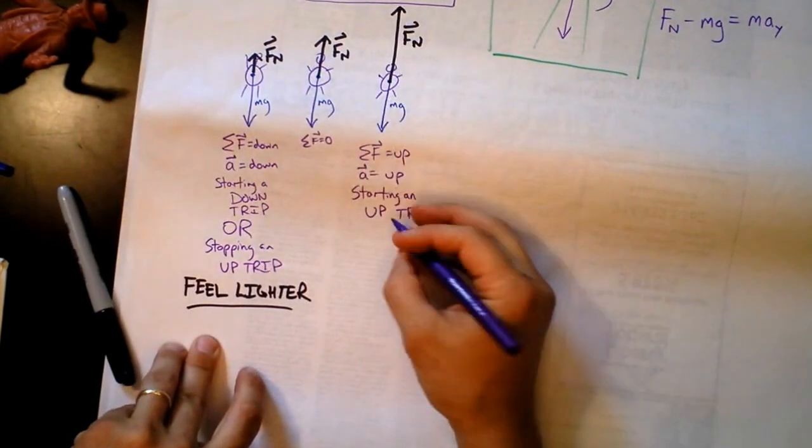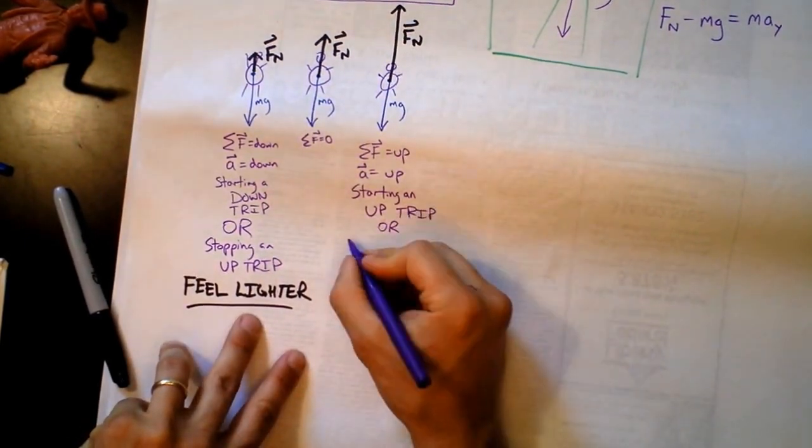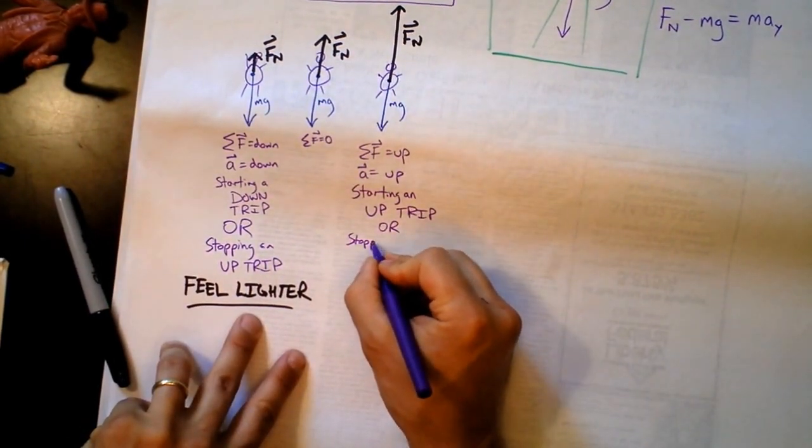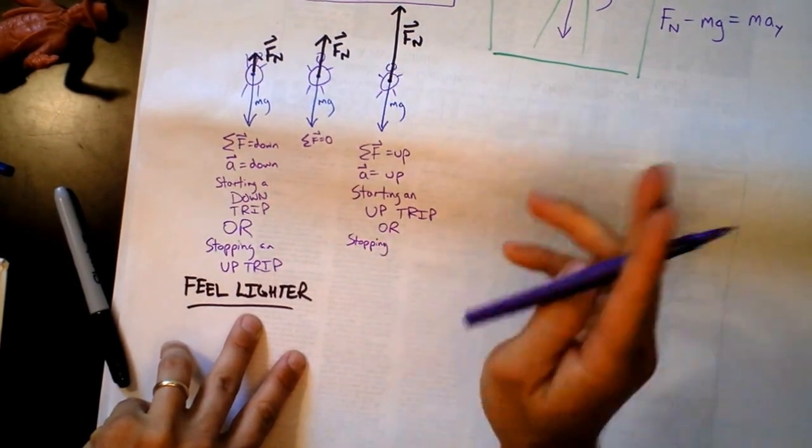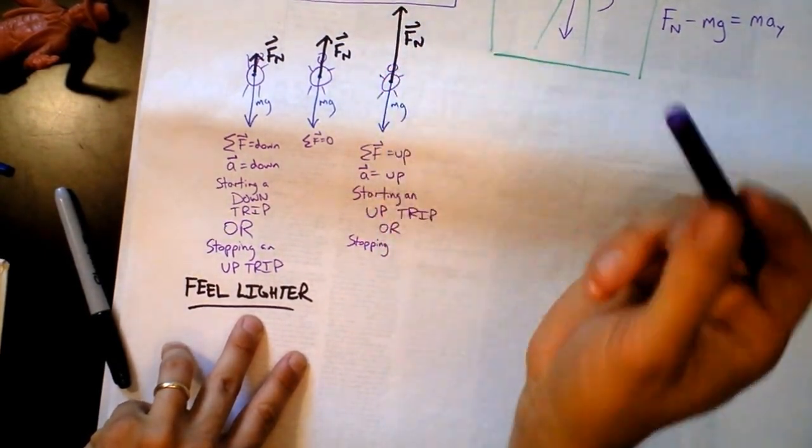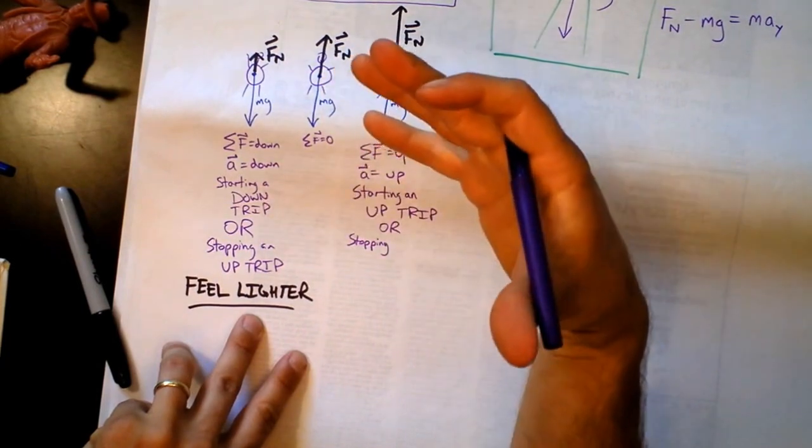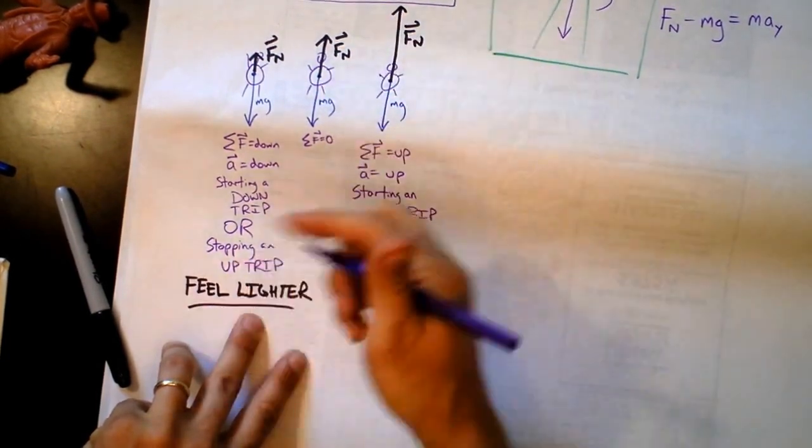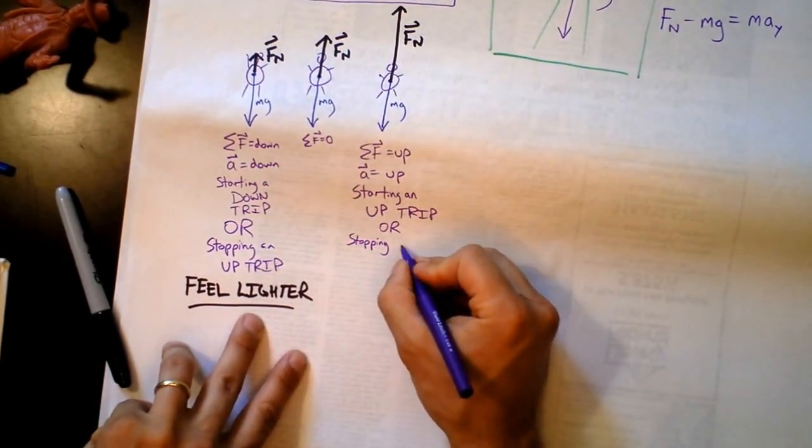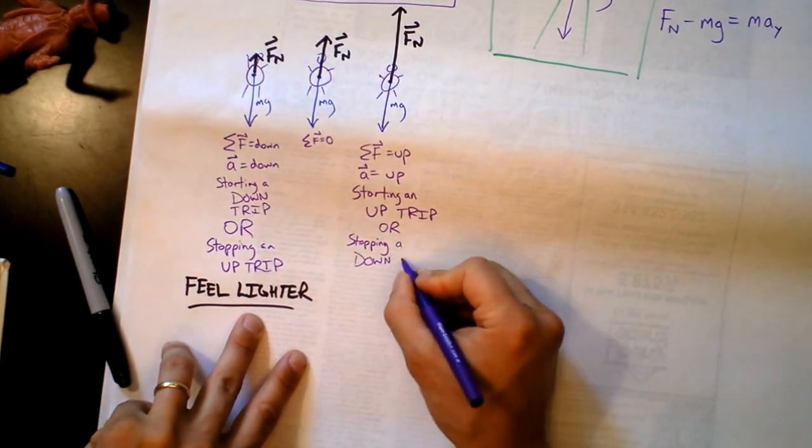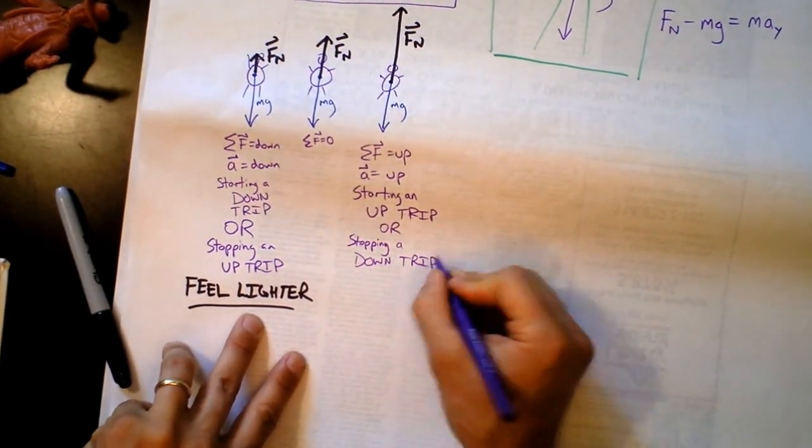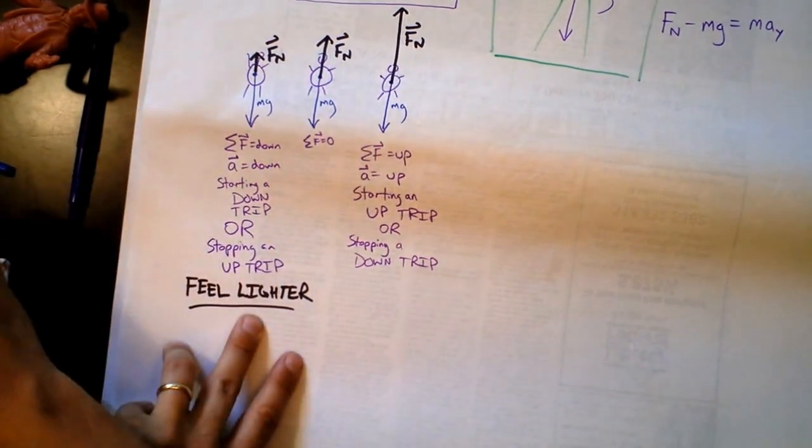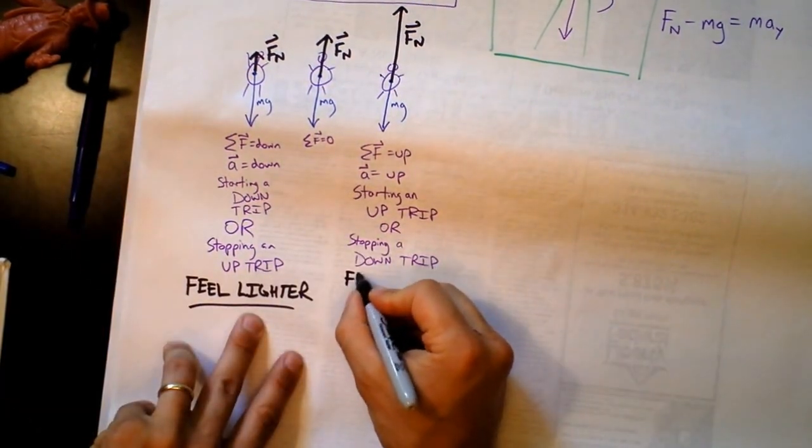Over here, this could be starting an up trip or stopping a down trip. Let's see if that makes sense. If you're going down to get some ice and you arrive at that floor, do you feel that? That you feel heavy as you're stopping? Yeah, stopping a down trip. Okay, cool. And in that case, you feel heavy. Okay.